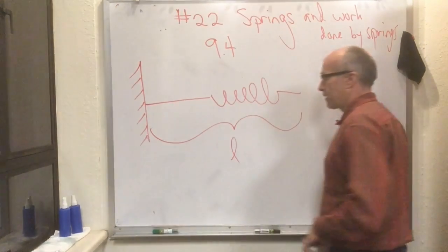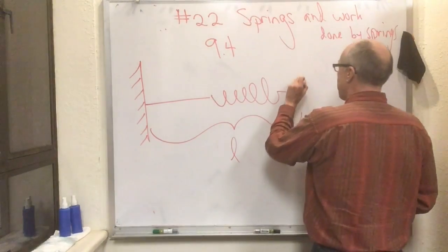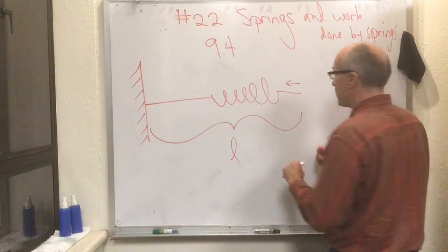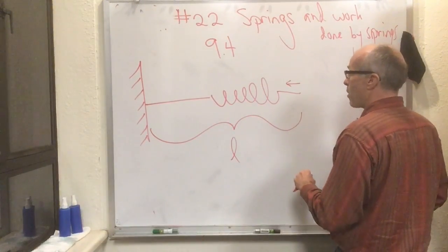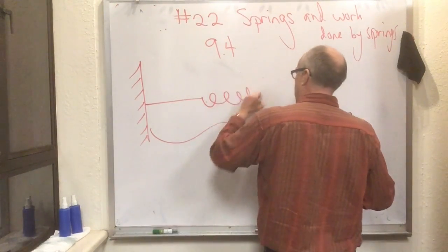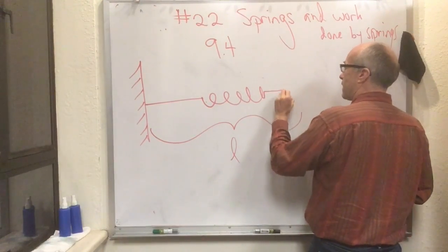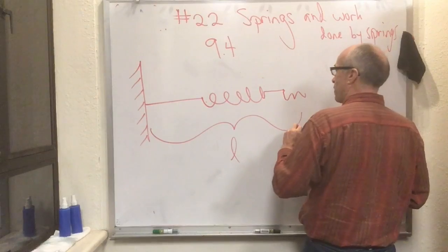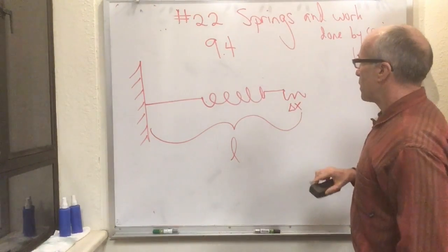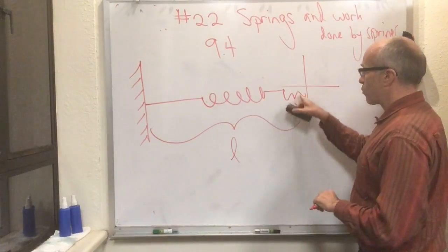If I press on this spring and cause it to compress a little bit, maybe I'll redraw that here. I compress this spring a little bit and now its end is here, and the amount I've compressed it is delta x.